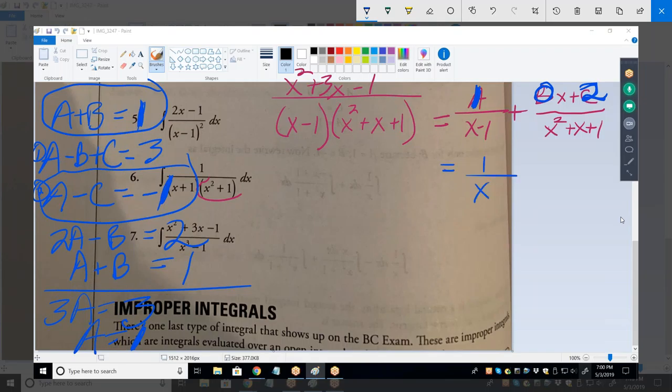So, that thing decomposes to what? What's the right side become? 2 over x squared plus x plus 1. So, we're just integrating that. The integral of both of them. So, this one's relatively easy. Just ln x minus 1.